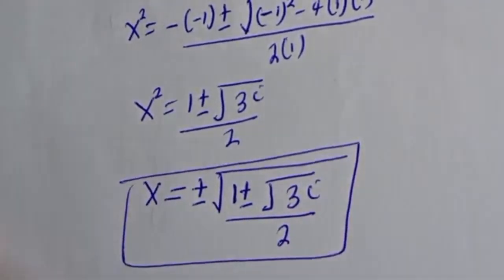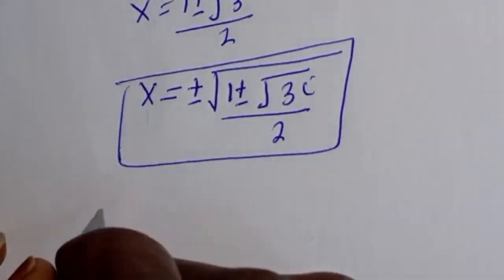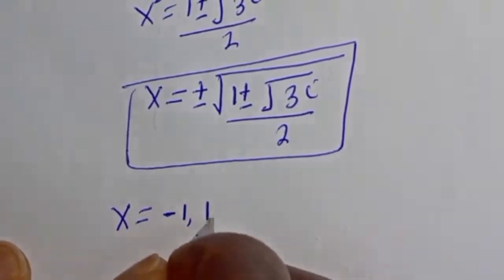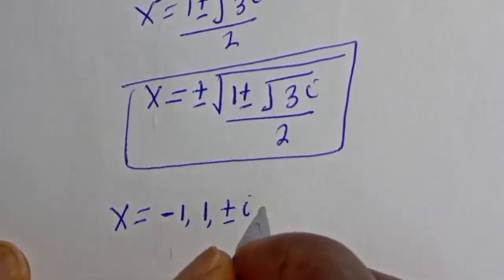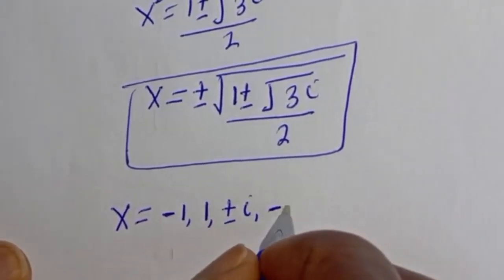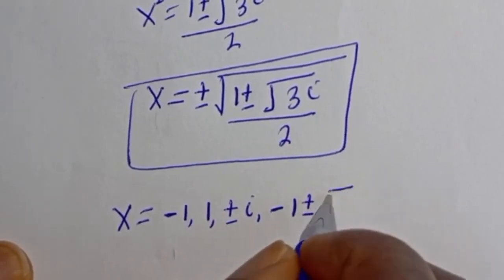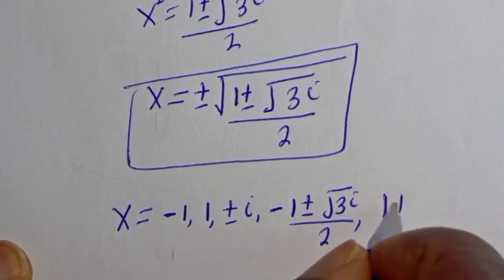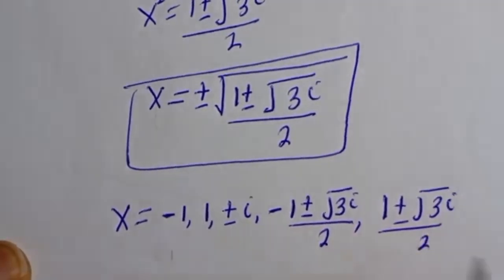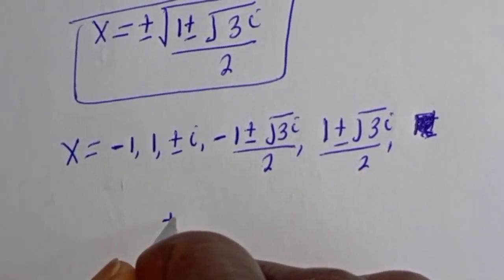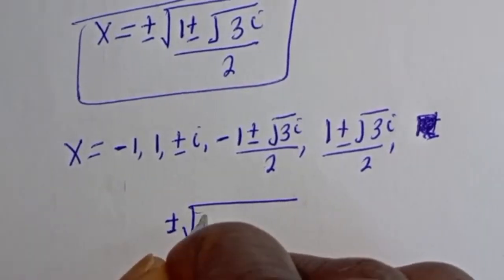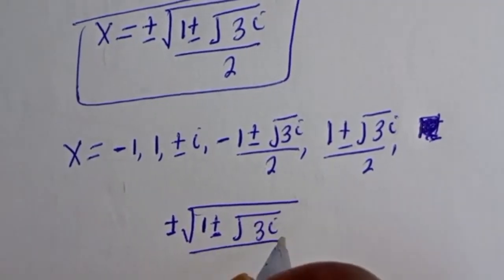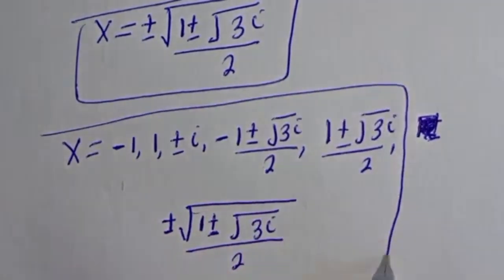This is the final answer. Therefore, the values of s include: 1, minus 1, plus or minus i, minus 1 plus or minus root 3i over 2, 1 plus or minus root 3i over 2, and plus or minus square root of 1 plus or minus root 3i over 2. So this is the final answer.